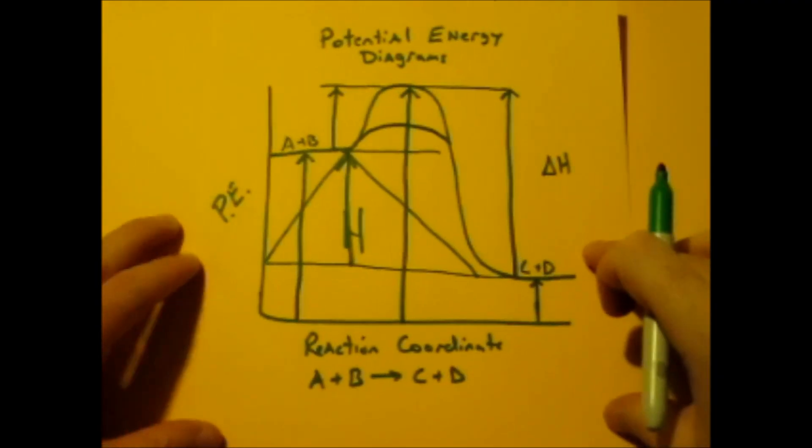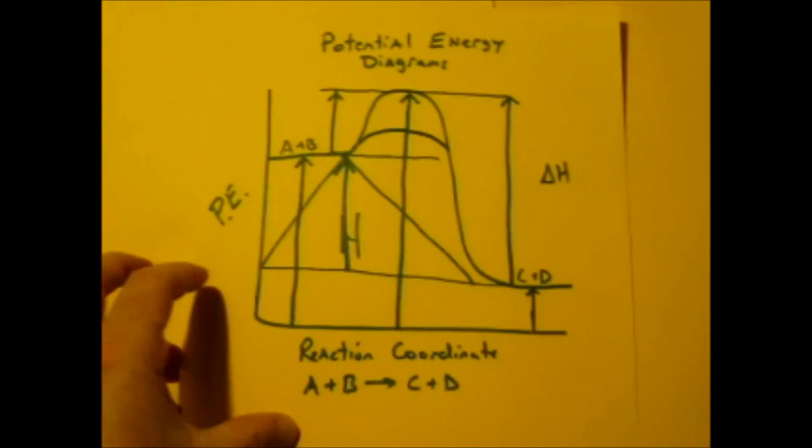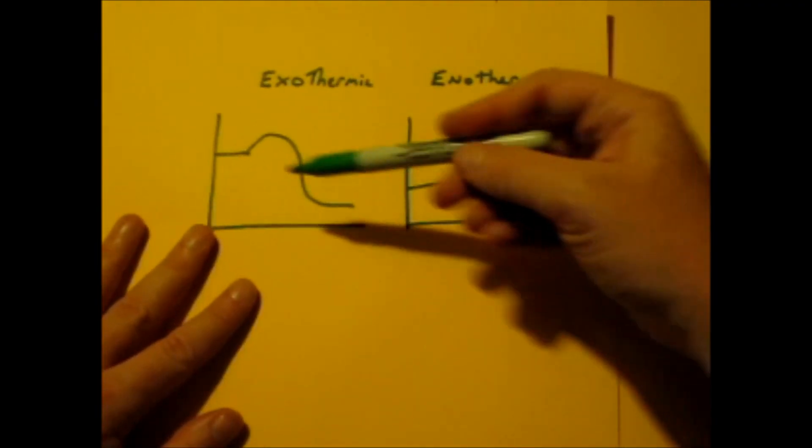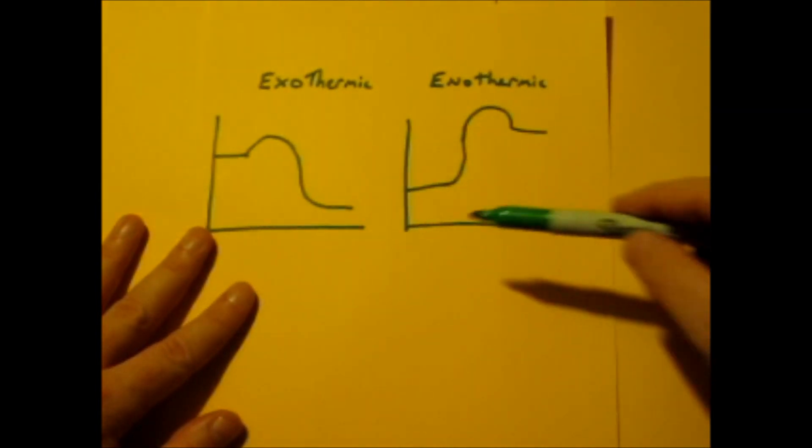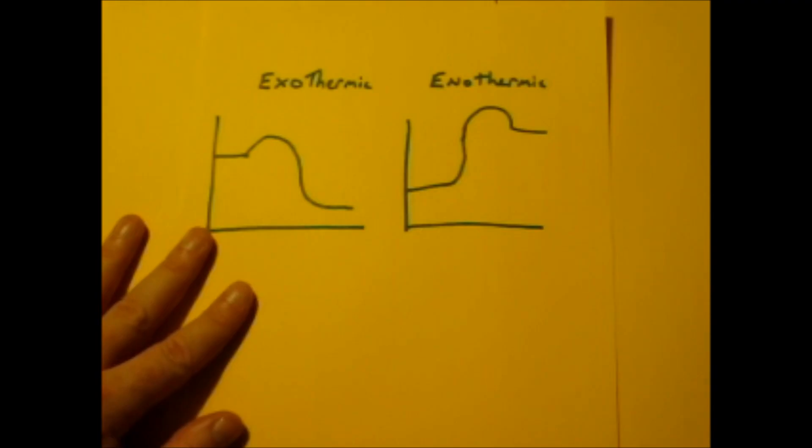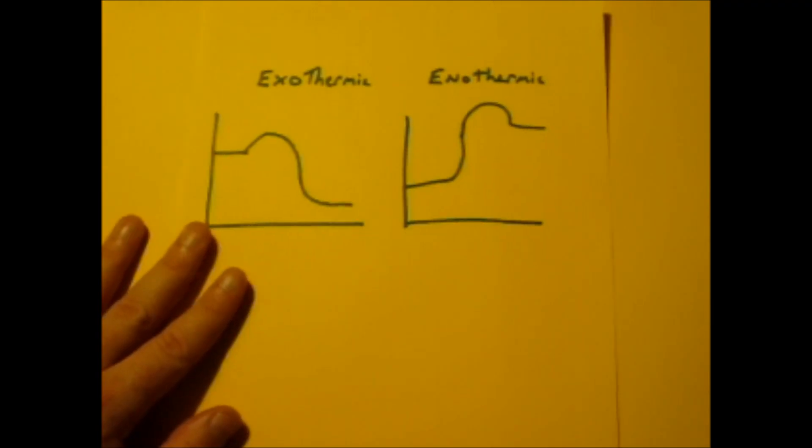So before I go, this is an exothermic process. And you can see that because the hill actually drops down. The endothermic one, you're going to see you start at low energy and you end up at a higher one. That's the only difference between exo and endothermic. So I hope this helped. If you need a more advanced version of this, watch the next video.